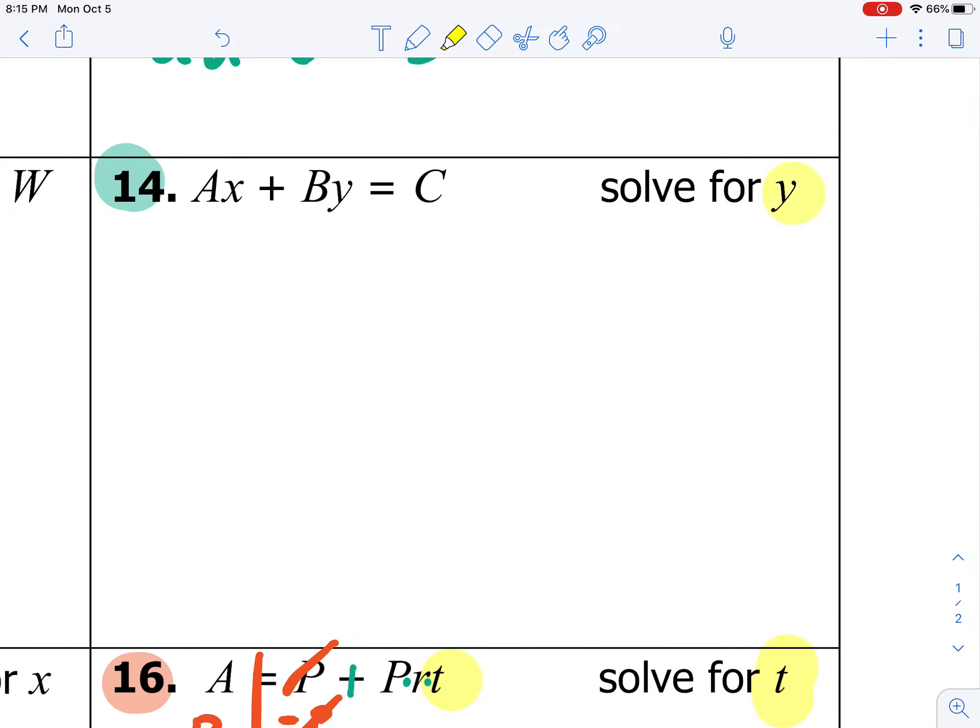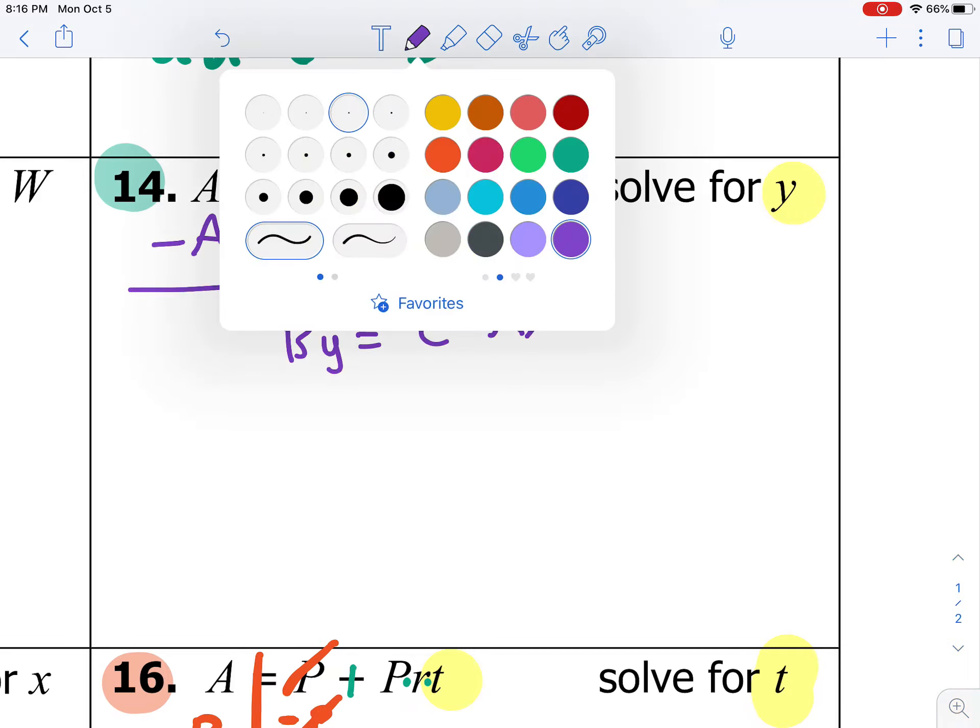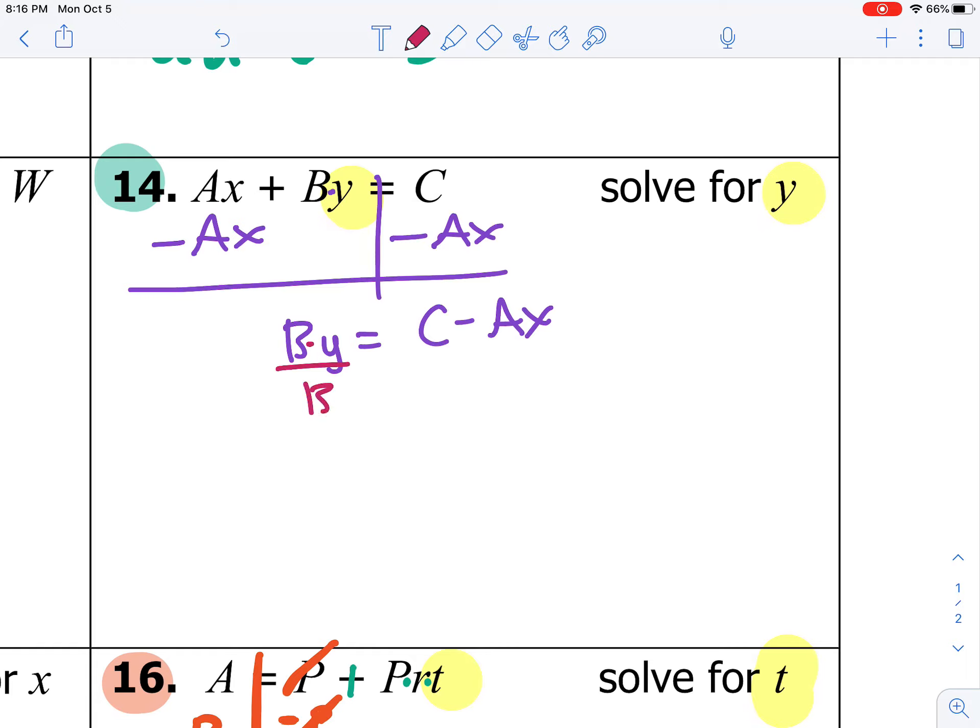Take a look at number 14. There are no fractions, so we're just going to jump right in, looking for where y is. y is right here next to B. So let's look at what's happening to y. First, y is being multiplied by B, and then we're adding AX to it. Well, to solve for y, we need to do these steps in reverse. So I need to start by subtracting AX from both sides. BY equals C minus AX. And then B is being multiplied by y. So to move B to the other side, we need to divide both sides by B. And we end up with the final answer of y equals C minus AX all over B.